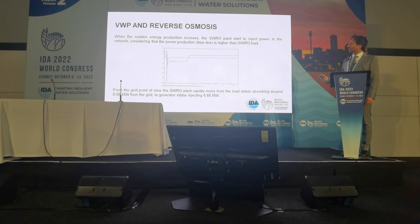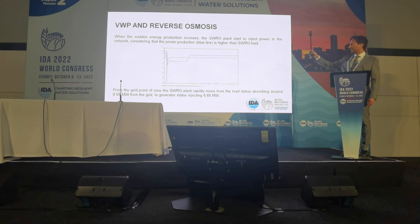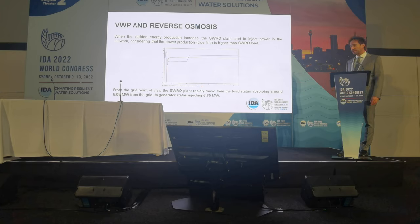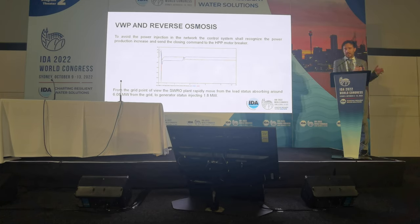If we are using four trains, we pass from consuming around 8 MW to potentially becoming a producer of energy in a very short time. Most of the time we cannot do that because the off-taker will say: I don't want the energy, you have to cut it. But if we are able to start another train, increasing the production in this water RO plant, we can see that we are really controlling the power — the system recognizes the sudden increase of energy and we can react accordingly.